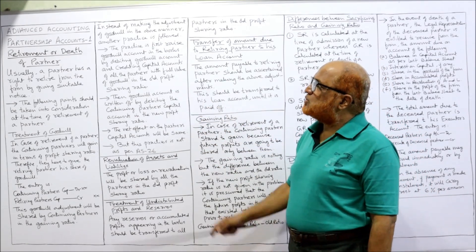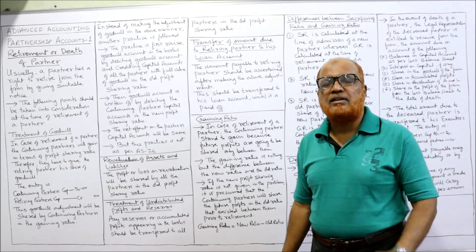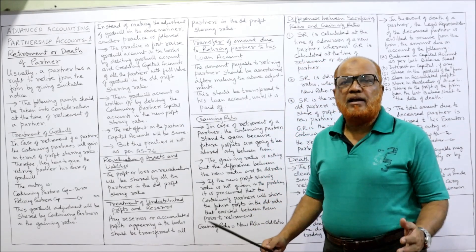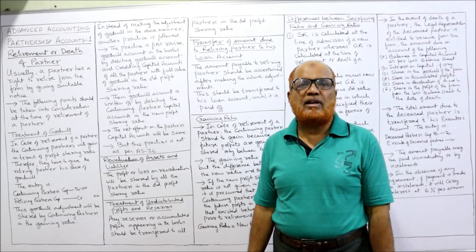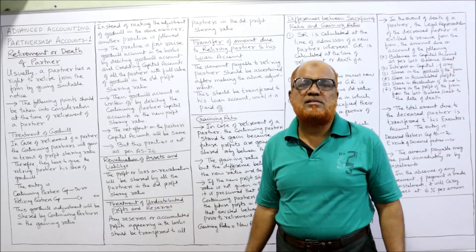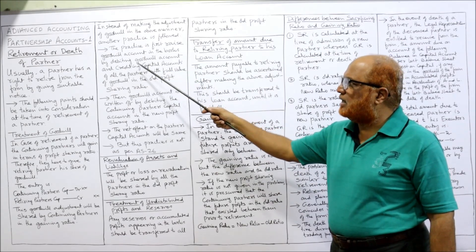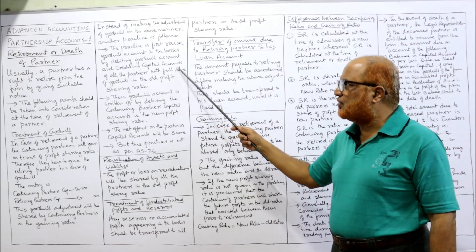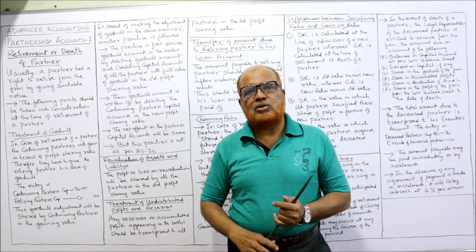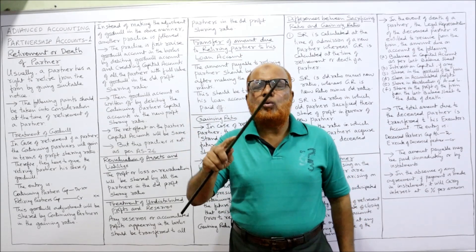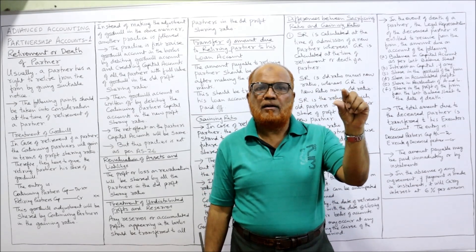Instead of making the adjustment of goodwill in the above manner, another practice is followed. Normally this is the correct method, but in India we have an old common practice which is not suggested by AS26 but is still prevailing — the ultimate effect is the same. The old practice is: first raise goodwill account by debiting goodwill account and crediting all partners' capital accounts with full value in the old profit sharing ratio — goodwill account debit to A's capital, to B's capital, to C's capital.